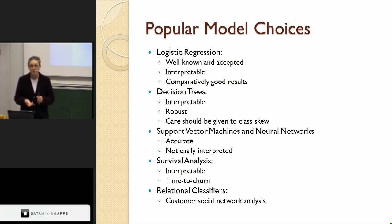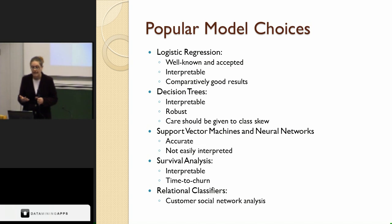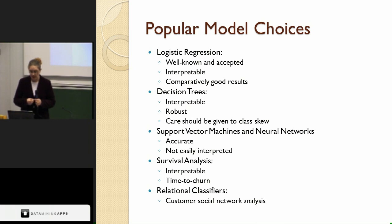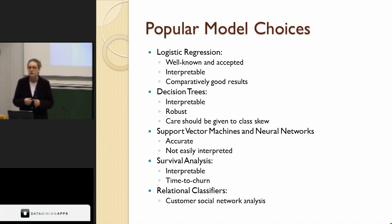On the opposite side of the spectrum are support vector machines and neural networks — both very accurate prediction models, but not easily interpreted. They're considered black box models, and for churn prediction they may not be the best choice, though they are still used. Survival analysis is a regression technique that is still highly interpretable. It offers something called a hazard ratio, which shows in a very straightforward manner how each attribute impacts the prediction.